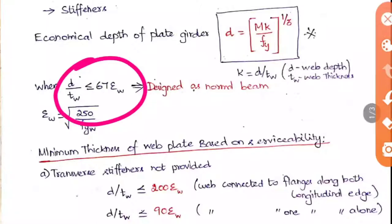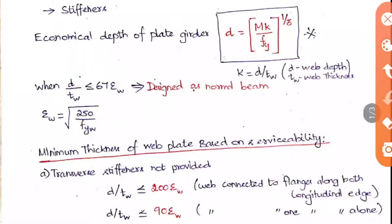The factor d/tw should be less than 67·εw. This is the condition for shear not to occur, which we have already studied. When this condition is met, a normal beam is enough. Only when this condition is exceeded do we go for plate girders. Note that εw = √(250 / fyw), where fyw is the yield stress of the web in particular.